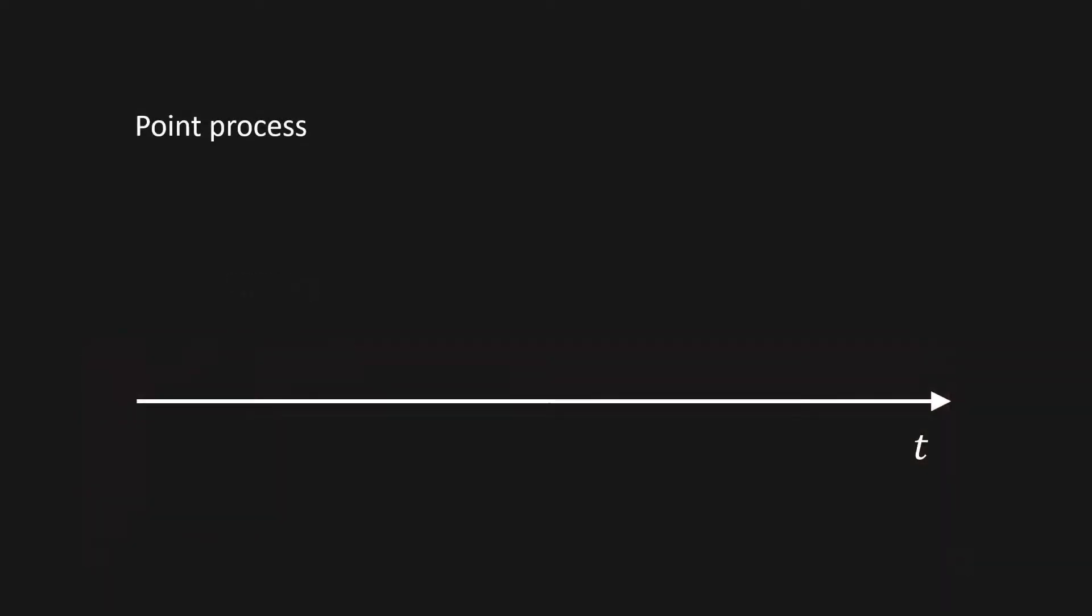This is where point process is jumping. Point process defines how many points we expect to see on some interval. The measure that defines this is called intensity.